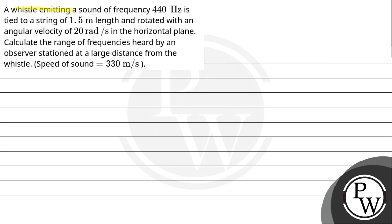Let's read the question. A whistle emitting a sound of frequency 440 Hz is tied to a string of 1.5 meter length and rotated with an angular velocity of 20 radian per second in horizontal plane. Calculate the range of frequencies heard by an observer stationed at a large distance from the whistle. Speed of sound is 330 meter per second.